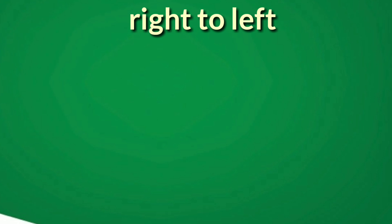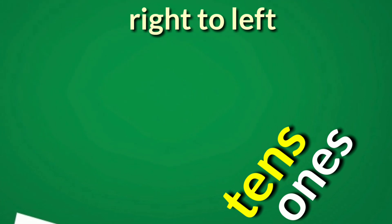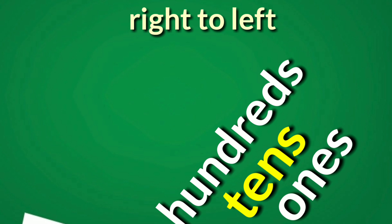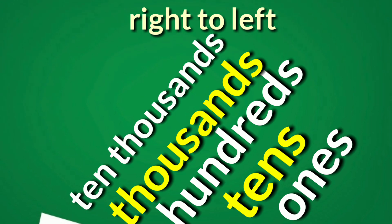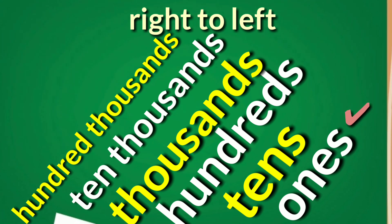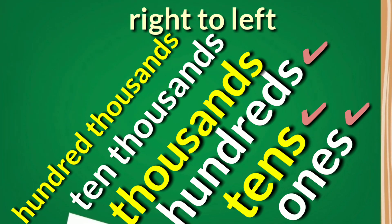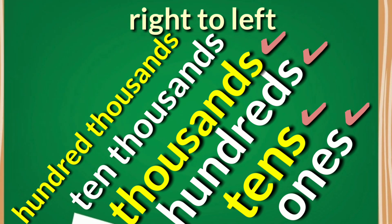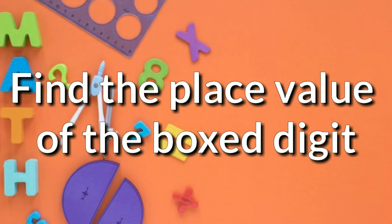Now let's go over the place values one by one so you can memorize them. From right to left: ones, tens, hundreds, thousands, ten thousands, and hundred thousands. Let's do it again: ones, tens, hundreds, thousands, ten thousands, and hundred thousands. Now let's try to answer this activity — find the place value of the boxed digit.